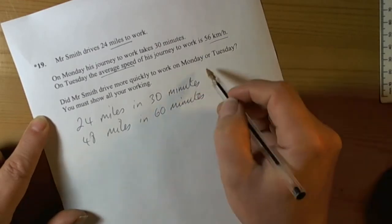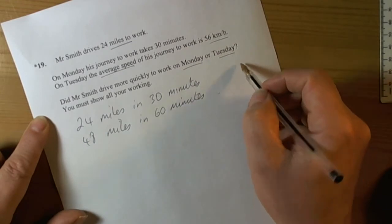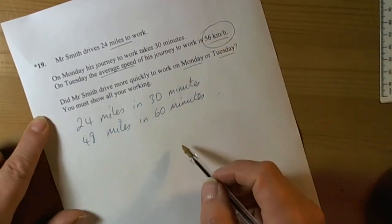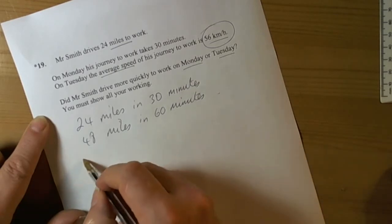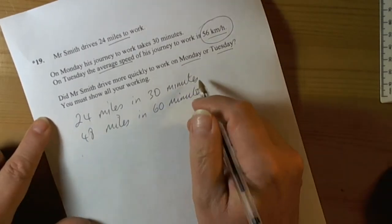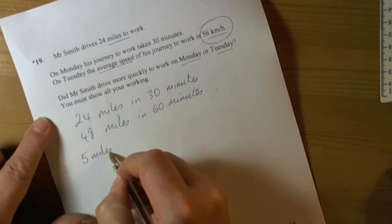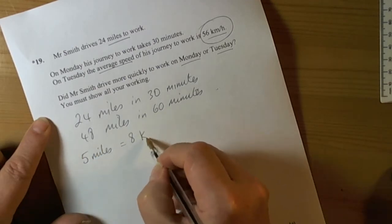Well it's asking, was he quicker on Monday or Tuesday? Well, it's told you that on Tuesday he was doing 56 km per hour. Now one of the conversions that you have to remember for your exams is that 5 miles equals 8 km.